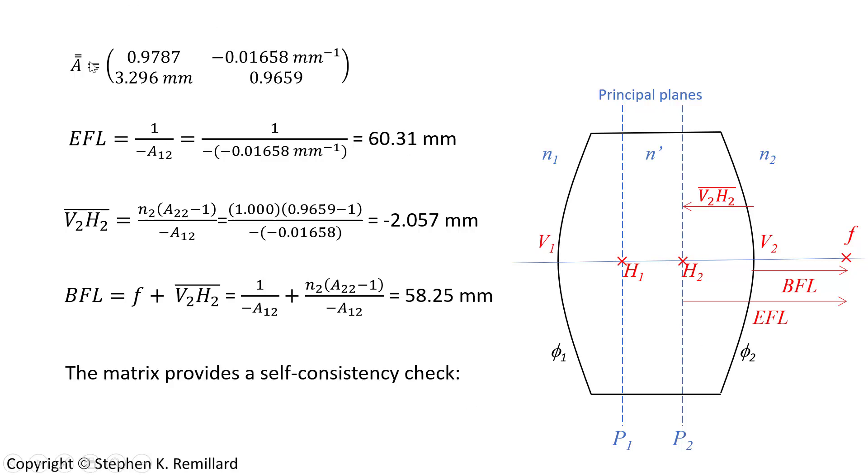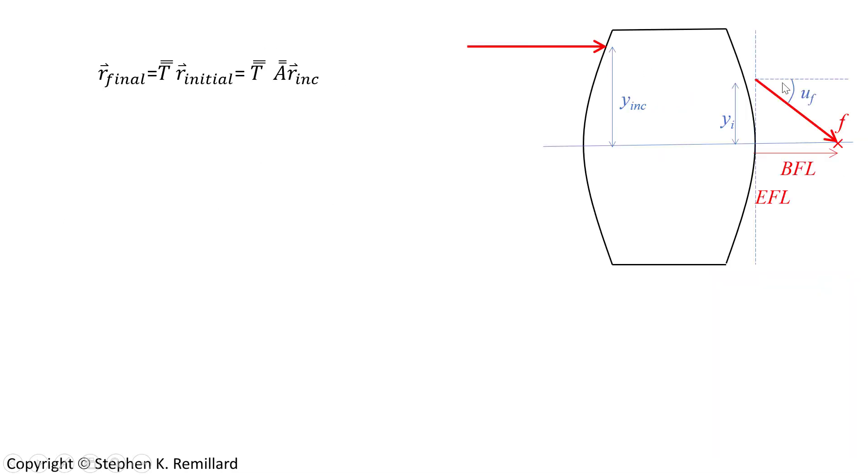Let's use the system matrix alone without the benefit of this expression to find the back focal length. Look at the ray coming in and the ray coming out. The back focal length is the distance from the vertex to the place where the ray hits the optic axis.